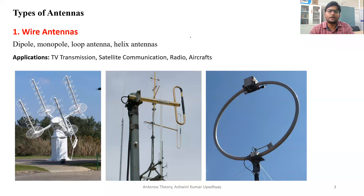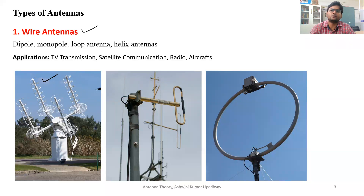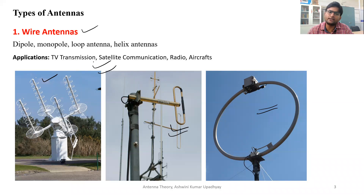Now let us see what are the basic types of antenna that we see all around us. First of all, we see wire antennas. In wire antennas, you will have a metallic wire of different thicknesses that can be made in different shapes for different purposes. For example, there is the helical antenna, which is basically used in satellite communication telemetry. Then we have the folded dipole kind of antenna, and we will be studying the dipole antenna in detail in further lectures. There are also loop antennas, used in searching missions for radio signals and in applications like TV transmissions, satellite communication, radio, and aircraft.